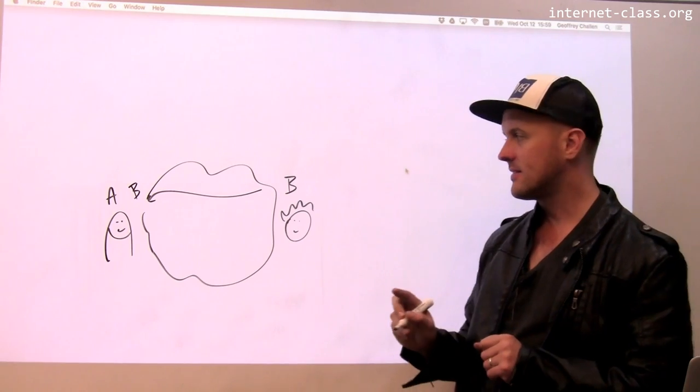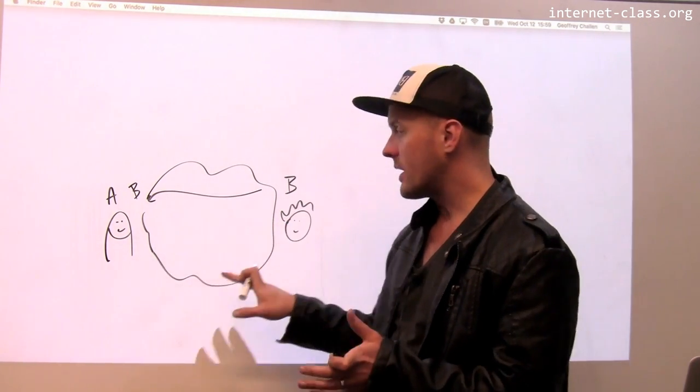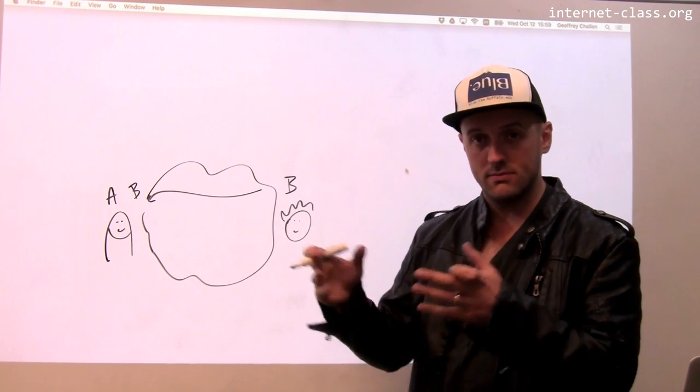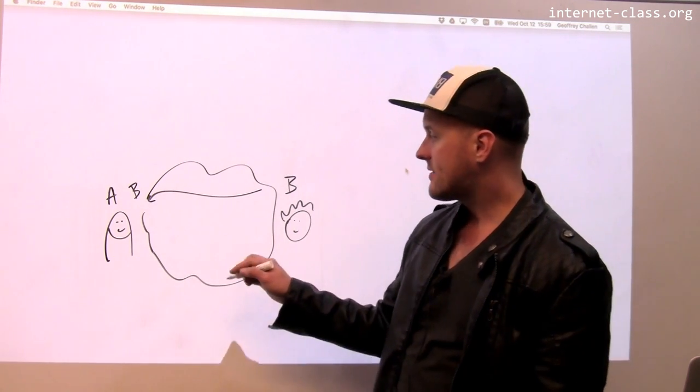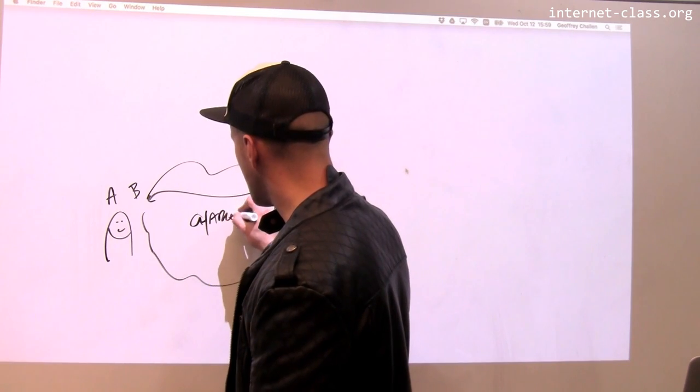The problem arises because the connection between Alice and Bob requires all of this untrusted internet in between, and someone, let's call them Charles, might be in the middle of this connection.